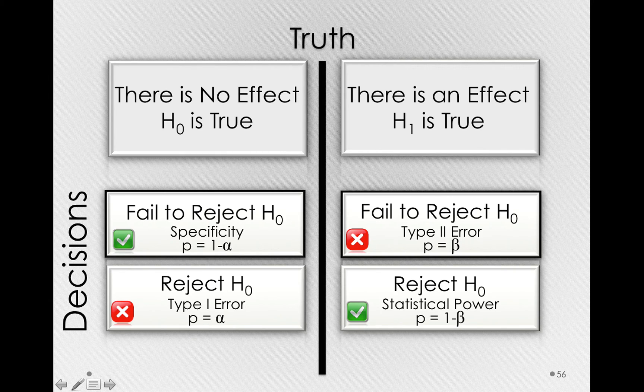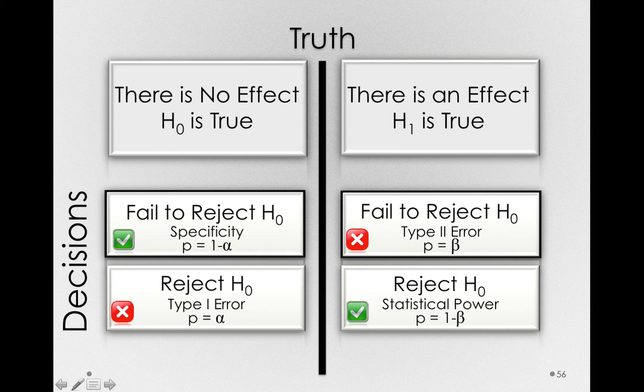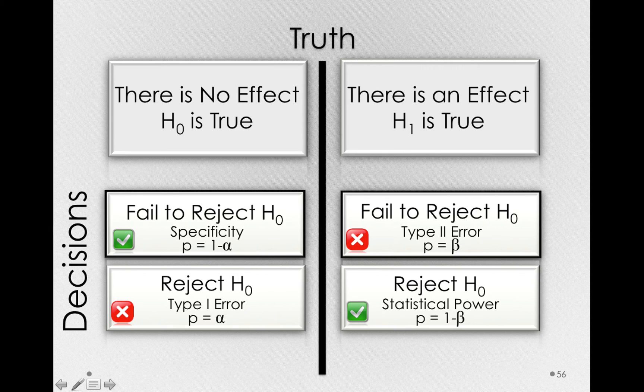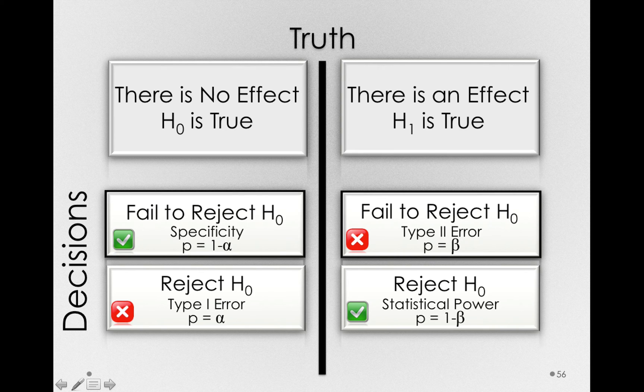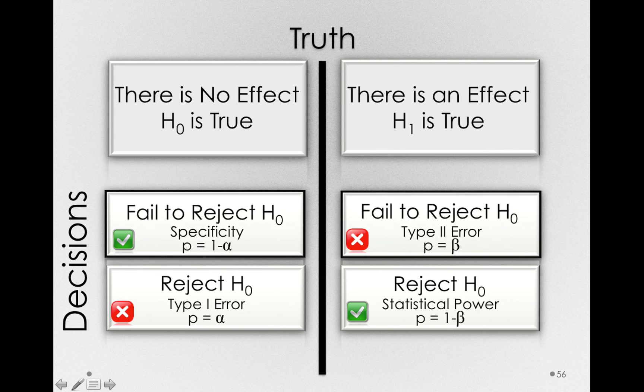Now, beta doesn't work like this. Beta will depend on what type of effect is actually out there. And if we're doing statistical inference, we don't know what the effect is out there in the world. Our entire purpose, the entire purpose of this enterprise is for us to uncover what the effect is. So ahead of time, we cannot know beta.